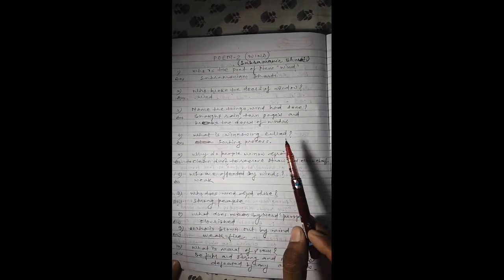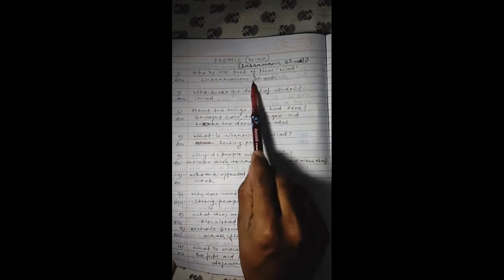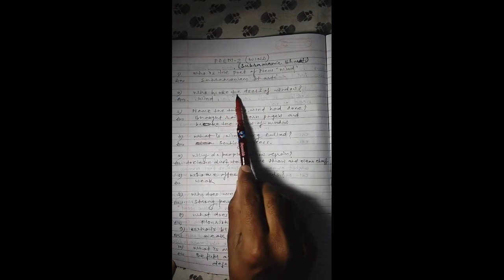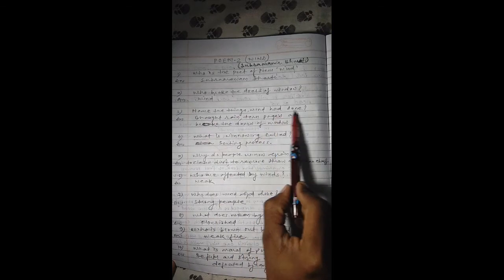The second poem for you, friends, is 'Wind' which is composed by Subramaniam Bharati. Generally here, wind represents the impact created by storms and problems. It represents the different obstacles and problems that come in our life. Let's understand its MCQs. Who is the poet of the poem 'Wind'? Subramaniam Bharati. Who broke the doors and windows? That is wind.